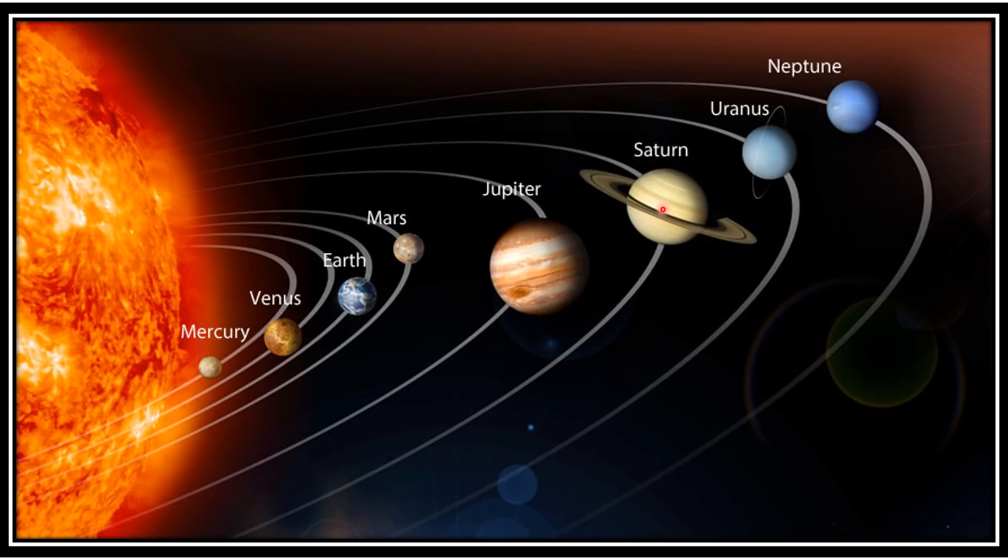Saturn - it appears yellowish in color. It has beautiful rings. It has a large number of satellites. It is least dense among all the planets.